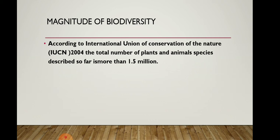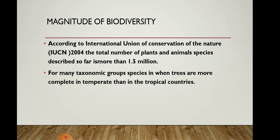For many taxonomic groups, species inventories are more complete in temperate regions than in tropical countries. Many taxonomist groups have completed inventories of different species in the temperate region, but in tropical countries they cannot complete them — meaning there are still many species whose discovery has not yet happened.